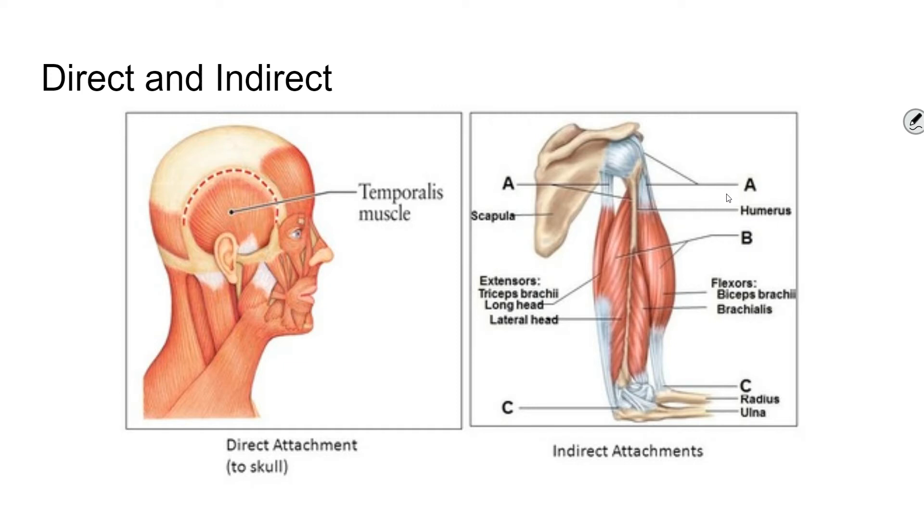Indirect attachments are the formation of these structures that attach muscle to bone that are called tendons. And so you have these tendons here that are basically groupings of that periosteum and that outer covering of the muscle that are grouped together. But this is considered an indirect attachment because the muscle is back here. It is not directly attached to the bone. It attaches to the bone through this tendon.